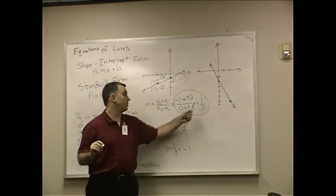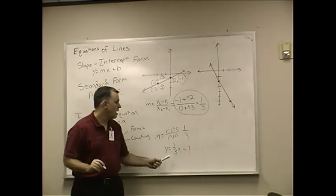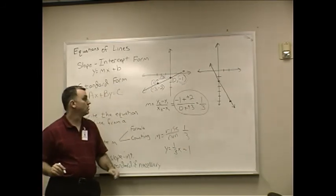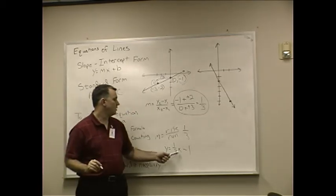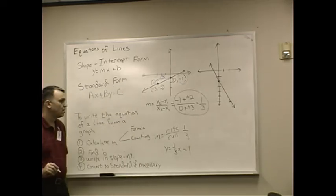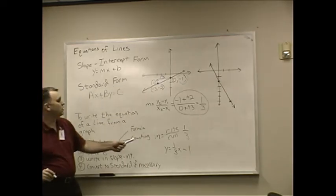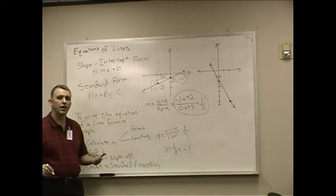Notice, I calculated the slope in two different ways. It didn't matter which way I calculated it. I ended up with a slope of 1 third. And it went through the y-axis at negative 1. So, it's y equals 1 third x minus 1. And if you need to, you can take this and convert it into standard form if necessary.